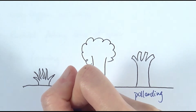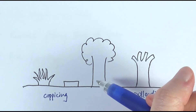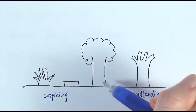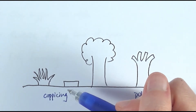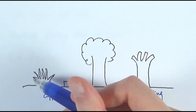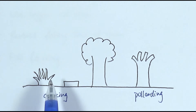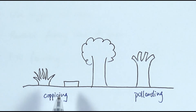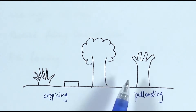Coppicing is similar to pollarding, except the tree is cut near the base. The idea is the same — encouraging more branches to grow from the cut so we can harvest more wood, as they grow relatively quickly. The key difference between coppicing and pollarding is simply how high the tree is cut. Coppicing generates more branches but they can be eaten by herbivores, whereas pollarding cuts higher up to avoid that, though it produces fewer branches.